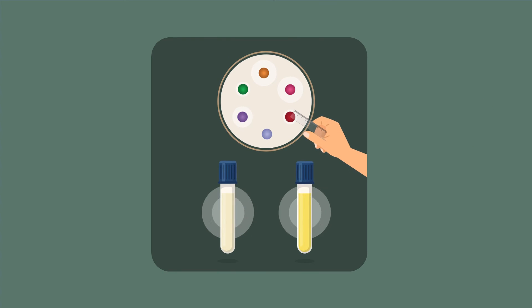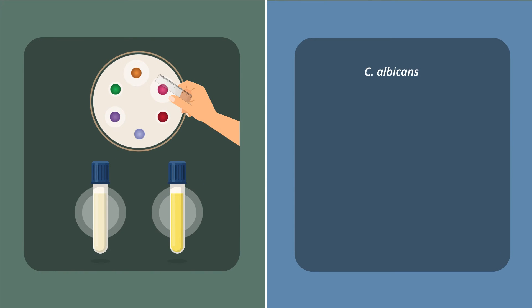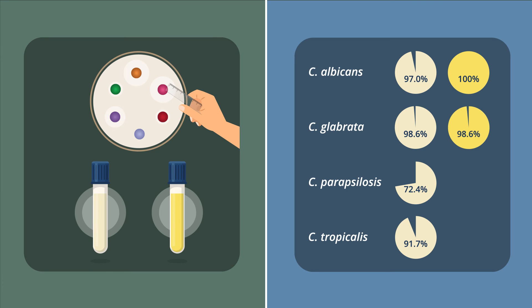They also found that the first readable results from the DDT method for standard and large inoculum of C. albicans, C. glabrata, C. parapsilosis, and C. tropicalis showed an agreement of 97.0%, 98.6%, 72.4%, 91.7%, and 100%, 98.6%, 96.6%, 95.8% respectively.